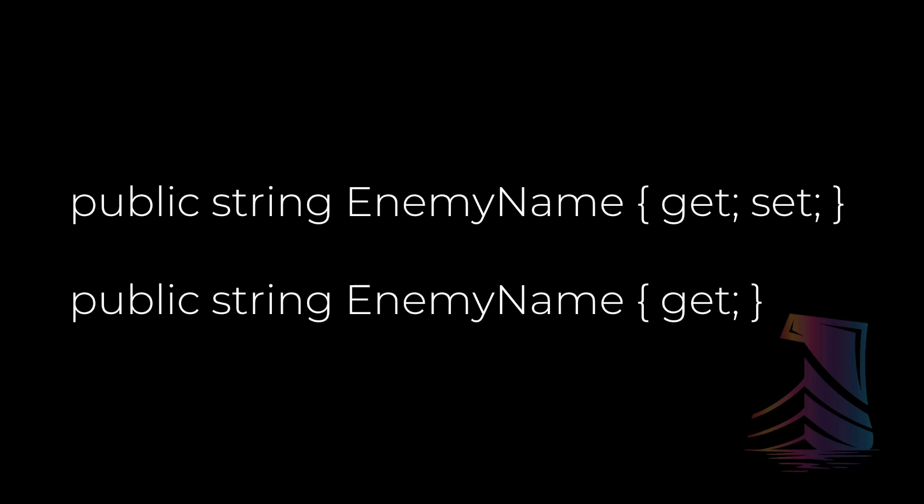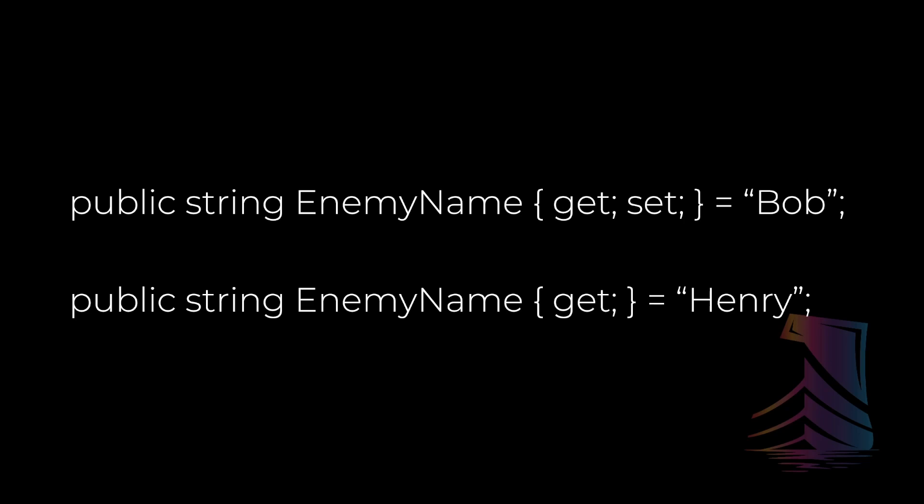Lastly, if you only have a get with your auto property, it'll always return 0 if it's a number, false if it's a boolean, or an empty string if it's a string, unless you initialize the property on declaration. To initialize a property on declaration, simply use the assignment operator after the curly braces and the value you wish to give the property, and end with a semicolon.